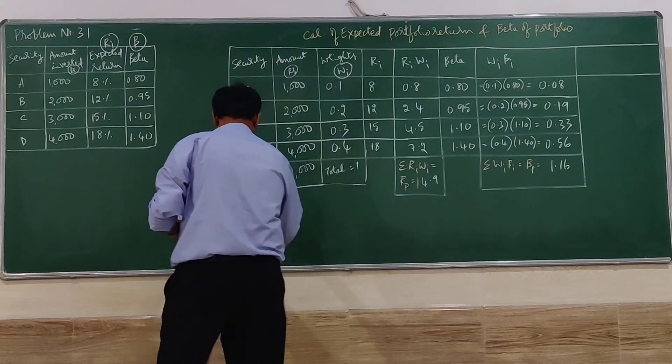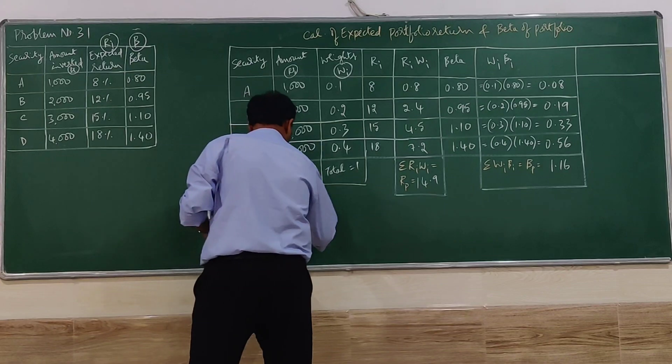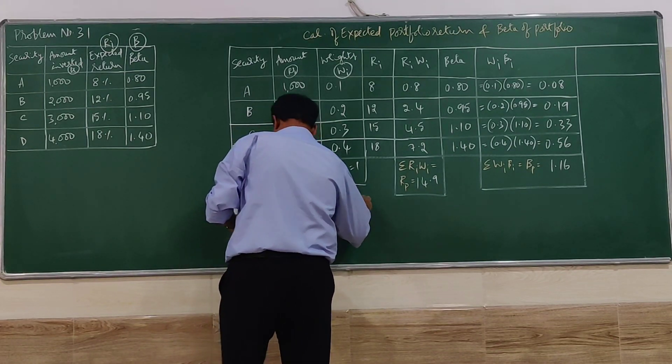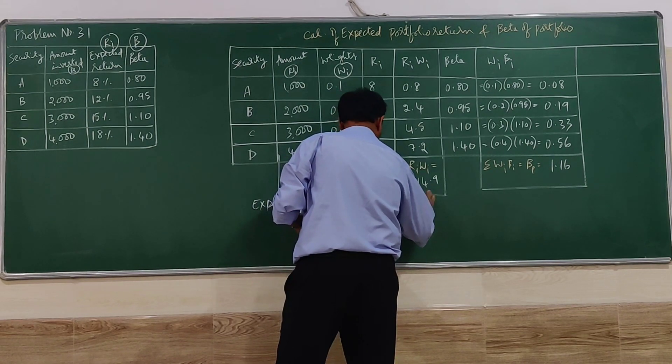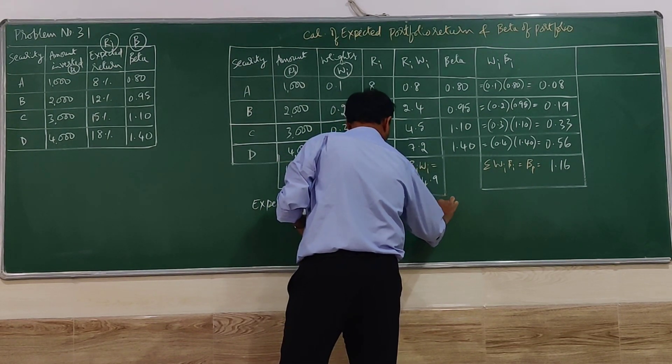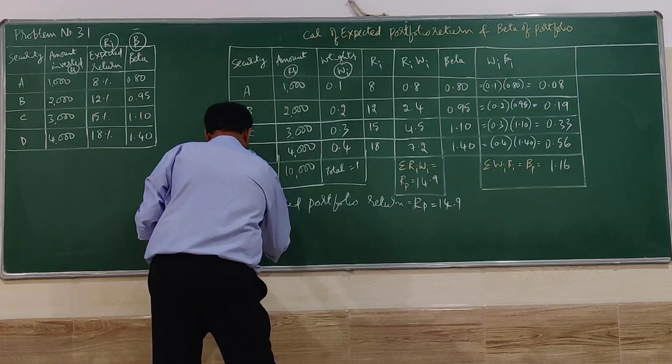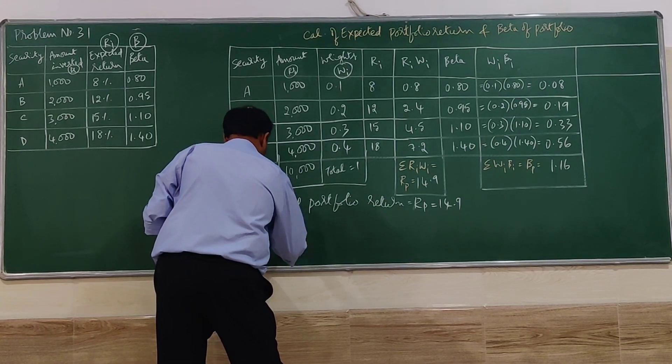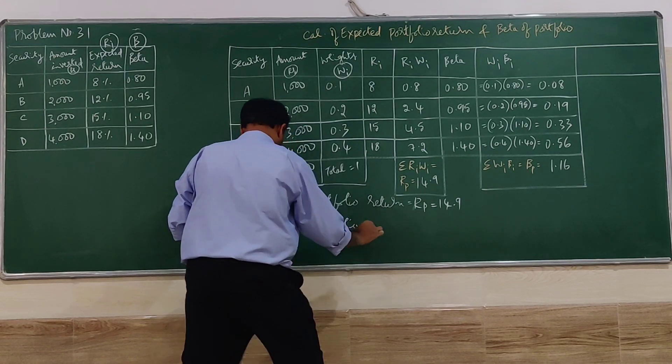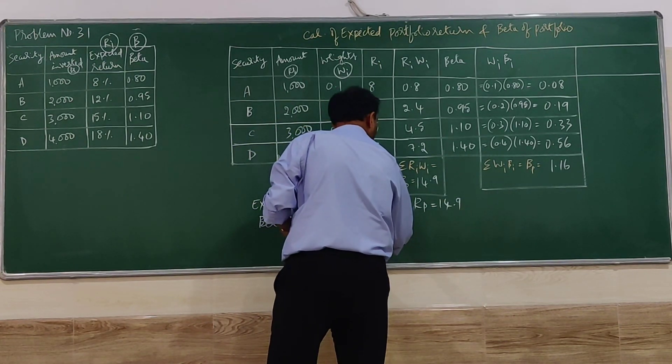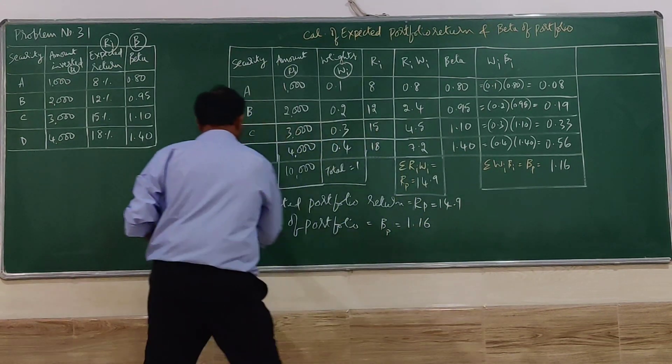0.08, 0.19, 0.33, 0.56. Total of that is 1.16. So I can compute as expected portfolio return 14.9, beta of portfolio 1.16.